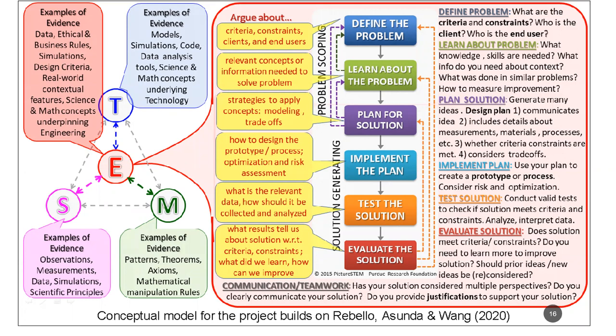Argumentation can situate itself in any one of these steps at any point in time. You could have an argument about how you're defining your problem, the criteria, the constraints, or the clients and end users. Down to thinking about what relevant concepts are needed, the prototyping process, or how you're interpreting results and weighing trade-offs. At any step in the engineering design process there can be an evidence-based reasoning moment, and because the process is cyclic, you could revisit with a whole new or enhanced argument.